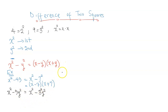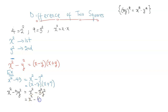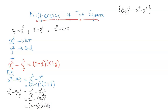We are going to recall from indices that xy raised to the power of a is equal to x to the power of a times y raised to the power of a. So this tells us that 3 squared times y squared can be written as 3y all squared. So we can see that this represents the difference of two squares: the first is x squared and the second is 3y all squared. So the answer is x minus 3y times x plus 3y. This is our final answer.